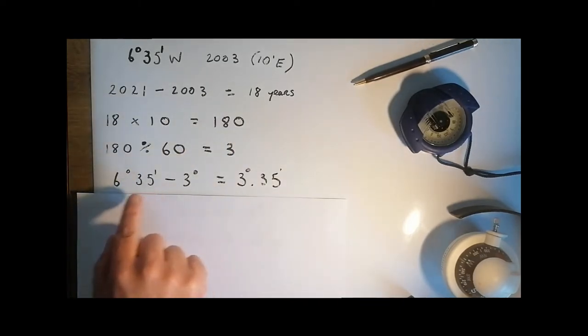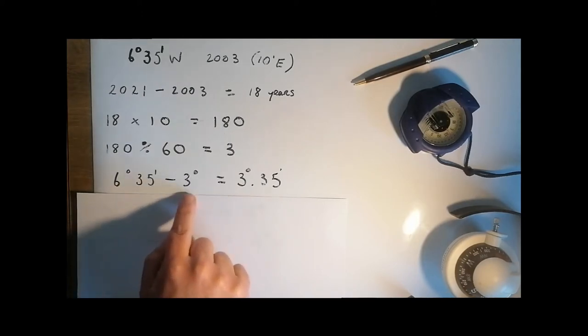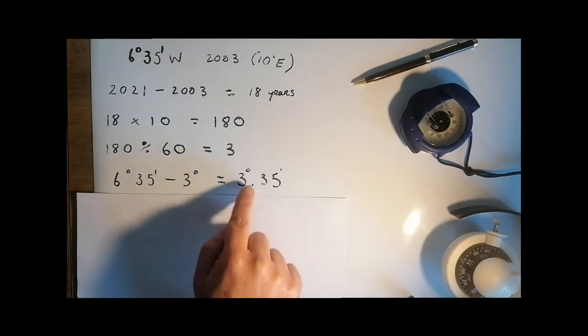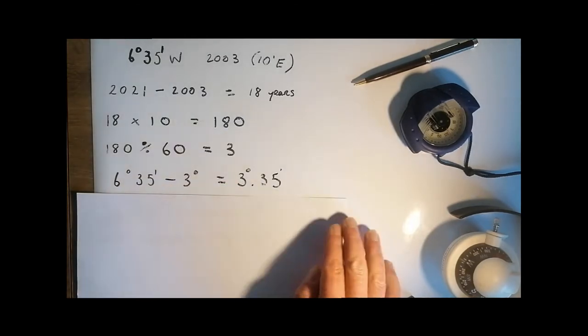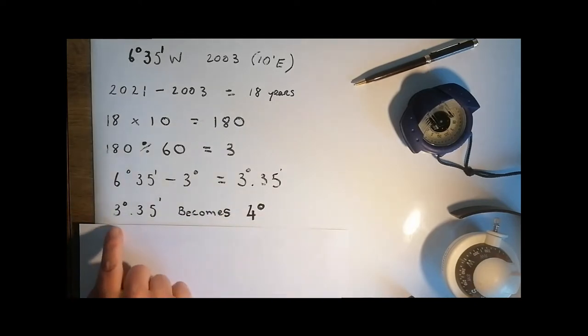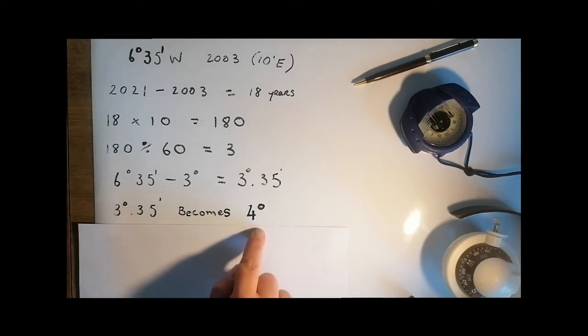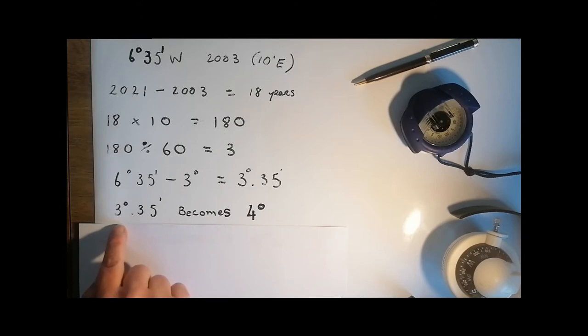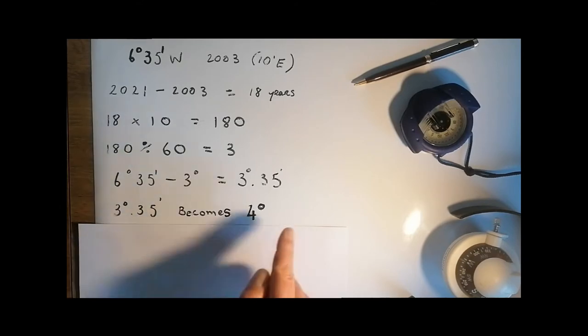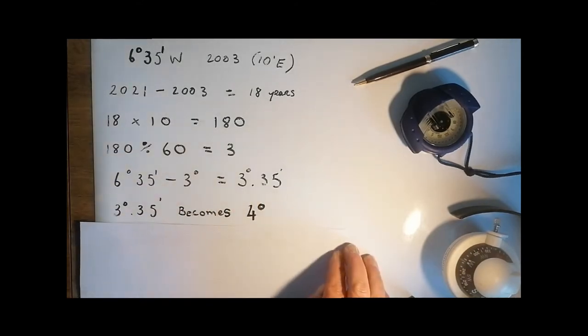From our original number from the rows, 6 degrees 35 minutes, we minus 3 degrees. We're left with 3 degrees 35 minutes. This becomes 4 degrees because it's closer to 4 degrees than it is to 3 degrees. So we round it up. Therefore, our variation is 4 degrees to the west.